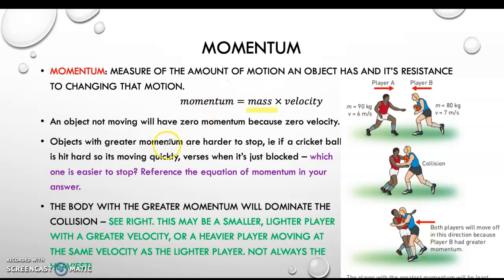Here's an example: if you have a cricket ball and I hit it hard so it's moving really quickly, or if I just try to block it so it's moving slower, we know which one is easier to stop — the one that is moving slower. So even though the cricket ball had the same mass, because its velocity was different, the one with the slower velocity will have a lower momentum, and therefore it is easier to change that motion, which in that case would be to catch the ball.